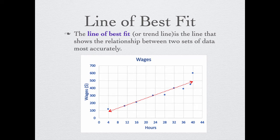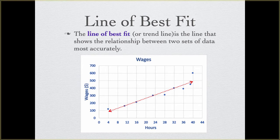The line of best fit, also called a trend line, is the line that shows the relationship between two sets of data most accurately. We are going to draw trend lines using the eyeball method. For this class, we are not going to use calculators or Excel spreadsheets to make trend lines — we are just going to use our eyeball method. When you draw a line of best fit and you are given a table, you can go through data points that are in your table. If you are not given a table, you want to make sure your trend line goes through places where the x and y coordinates cross each other.